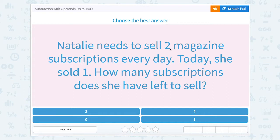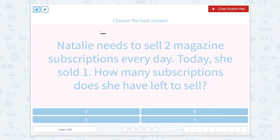Natalie needs to sell two magazine subscriptions every day. Today she sold one. How many subscriptions does she have left to sell? Natalie has one subscription and she needs a certain amount to equal two. So one plus something equals two. I can also write this as two minus one equals blank, and that missing number for both would be one.